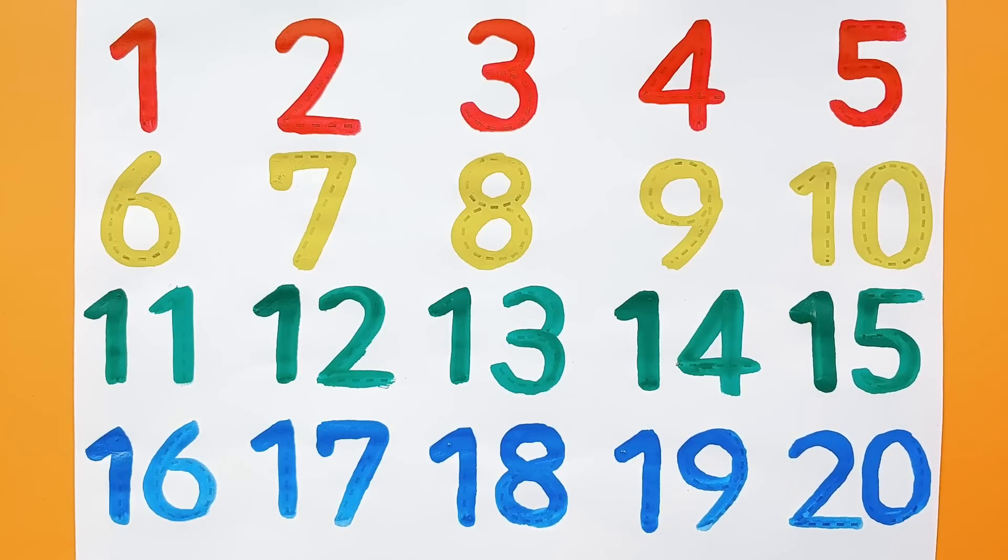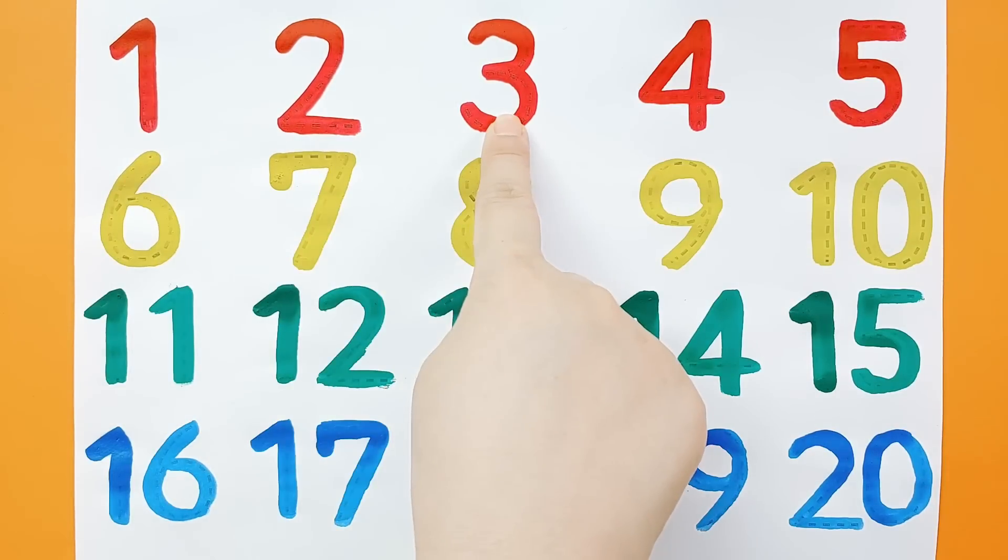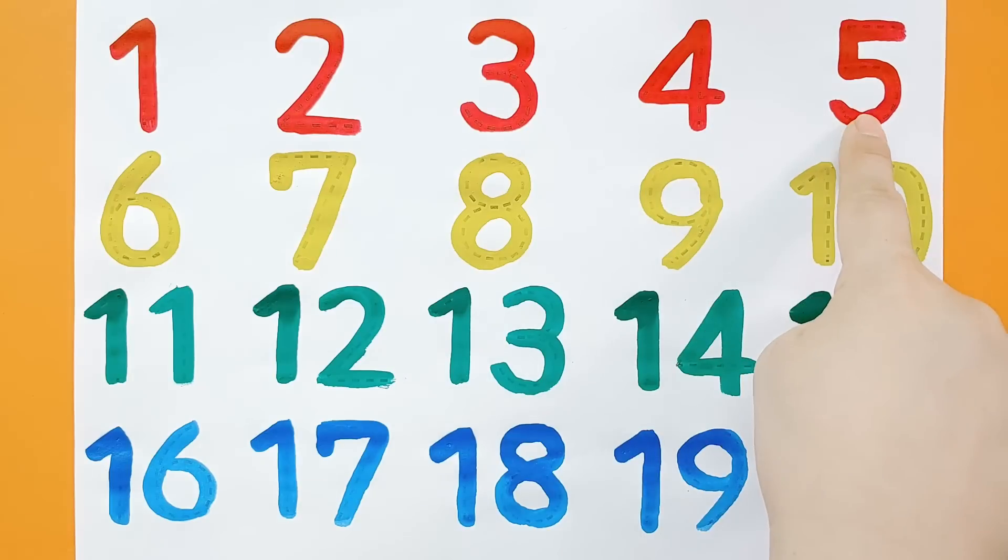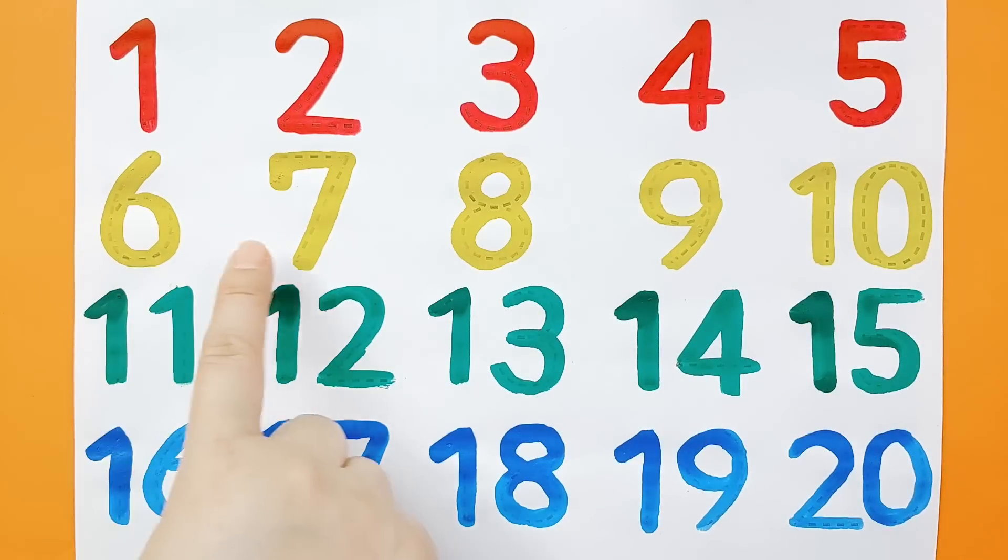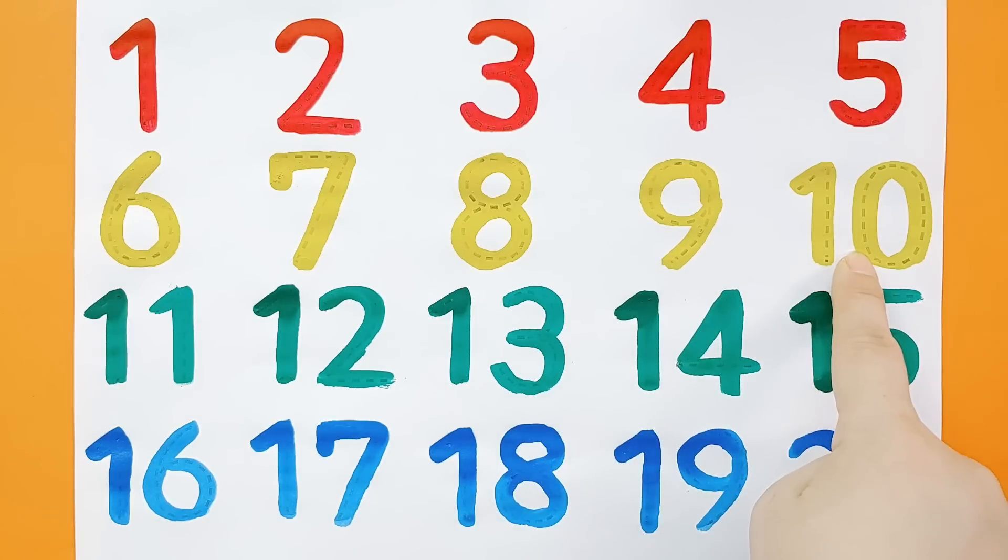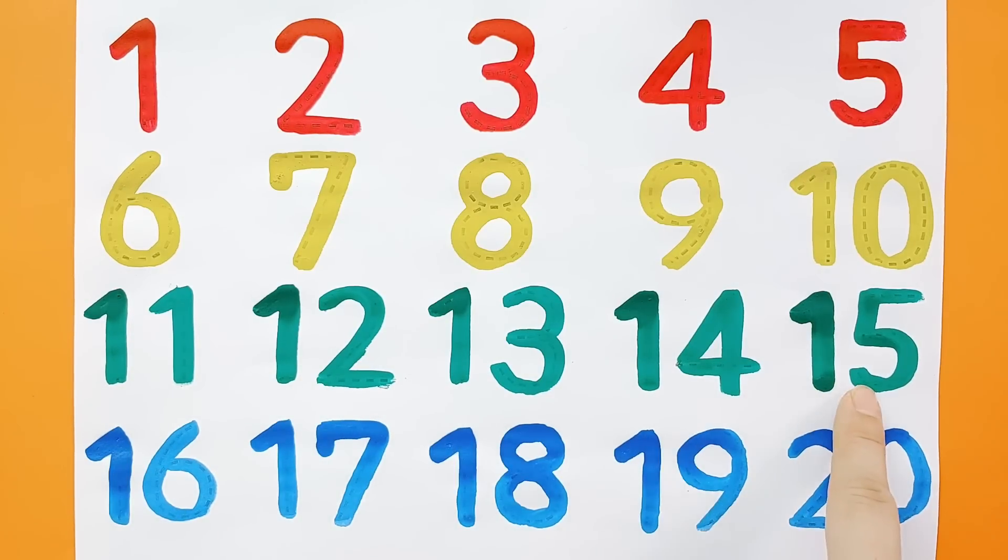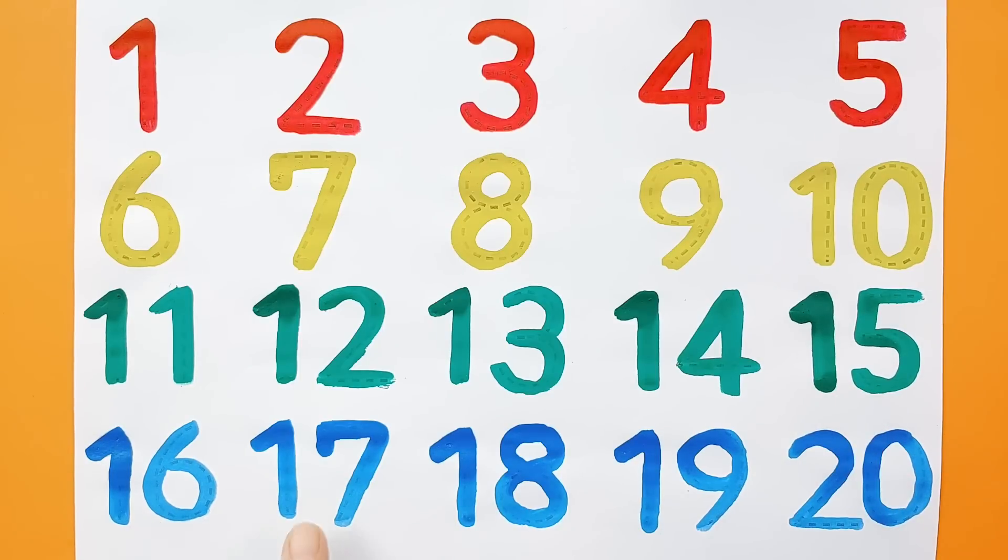Twenty. One, two, three, four, five, six, seven, eight, nine, ten, eleven, twelve, thirteen, fourteen, fifteen, sixteen, seventeen, eighteen, nineteen, twenty.